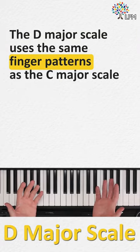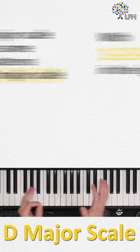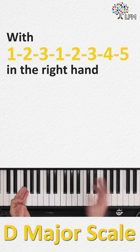The D major scale uses the same finger patterns as the C major scale with 1, 2, 3, 1, 2, 3, 4, 5 in the right hand.